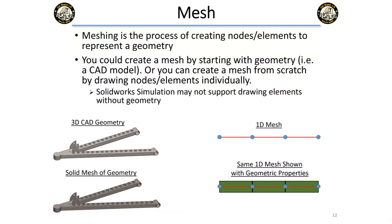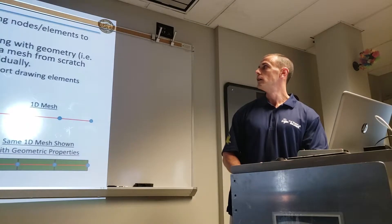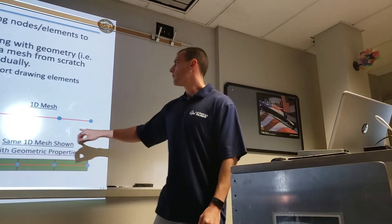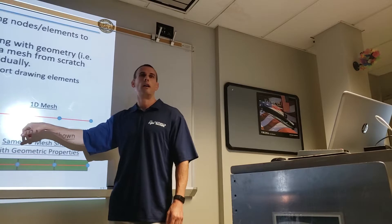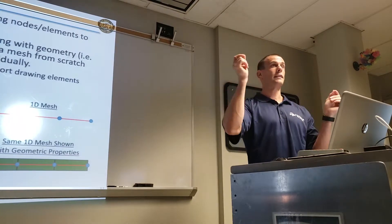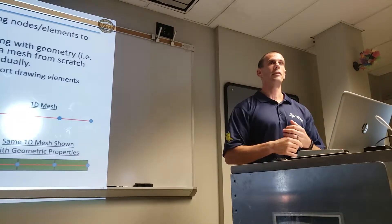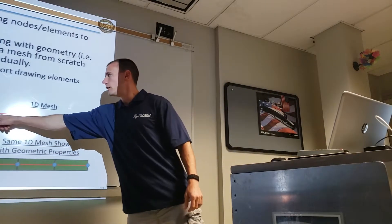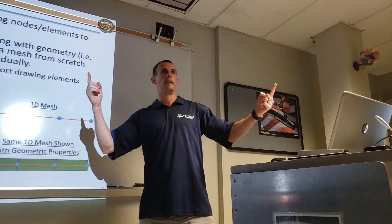Meshing is the process of creating nodes and elements to represent geometry. You can create a mesh by starting with geometry like a CAD model, or you can create a mesh from scratch. This may not be applicable to SOLIDWORKS, but in some programs you can just draw nodes and elements — for example, put in an XYZ dimension of two nodes, connect them, and that's an element. You tell it the cross-sectional area, and in some software you can create a long one and say split this into ten elements.